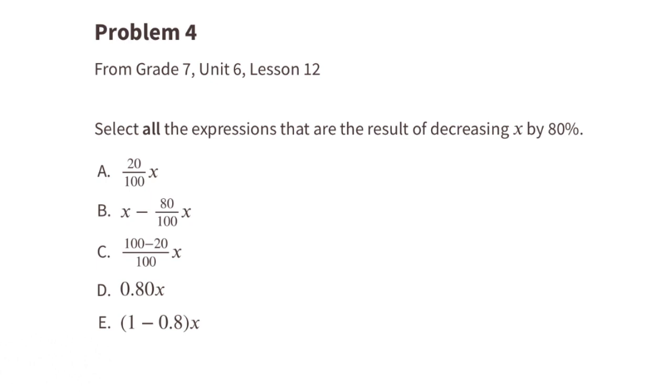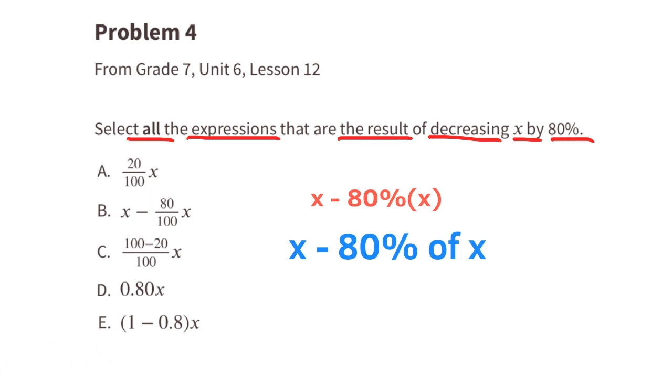Problem number 4. From 7th grade, Unit 6, Lesson 12. Select all the expressions that are the result of decreasing X by 80%. We can start with X, and then we're decreasing X by 80%, so that means that we can subtract 80% of X. So we can write X minus 80% times X, or X minus 80% of X. 80% can be written as 80 over 100. So we can rewrite this as X minus 80 hundredths times X. We can also write it as a decimal, which would be X minus 80 hundredths times X, and we can write it as X times 1 minus 80 hundredths.